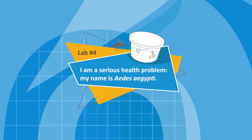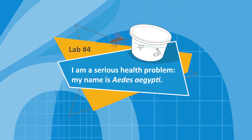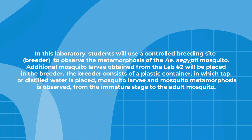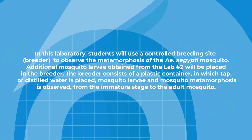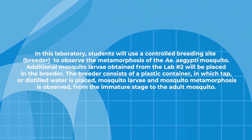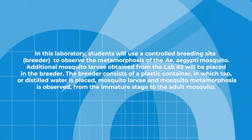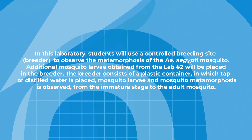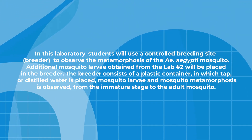Lab number four: My name is Aedes aegypti and I am a serious health problem. In this lab, students will use controlled breeding sites to observe the metamorphosis of the Aedes aegypti mosquito. Additional mosquito larvae obtained from lab two will be placed in the breeder. The breeder consists of a plastic container in which tap or distilled water is placed. Mosquito metamorphosis is observed from the immature stage to the adult mosquito.